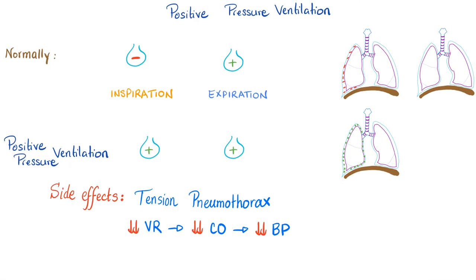To understand positive pressure ventilation, we first need to understand normal inspiration and expiration. Normally, inspiration creates a negative intra-alveolar pressure which sucks air in; expiration creates a positive intra-alveolar pressure. Positive pressure ventilation does not let pressure fall below atmospheric pressure — it's always above atmospheric. Side effects: if too much positive pressure, it can lead to tension pneumothorax. Also, high positive pressure makes it difficult for venous blood to return upward, decreasing venous return, cardiac output, and blood pressure.